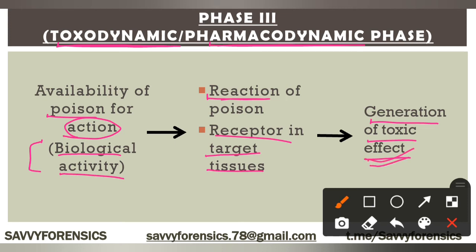The last phase — Phase 3 — we call the toxodynamic or pharmacodynamic phase, which is the biological activity where the poison is available to show its reaction in the third phase, interacting with receptor target tissues, resulting in the last toxic effects.